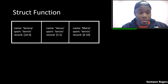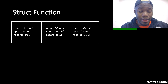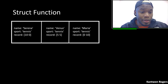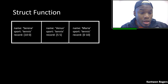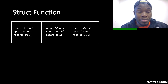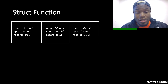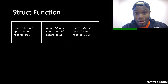Suppose I have this structure array that I want to create that encompasses data about tennis players. There are three field names: the name field, a sport field, and also the record, which is a vector where the first numbers are wins and the second numbers are losses.